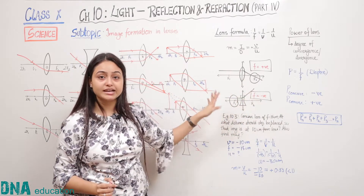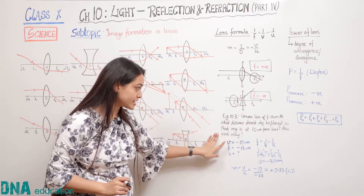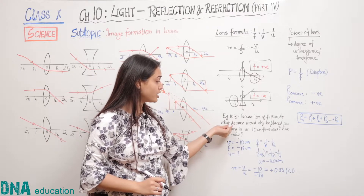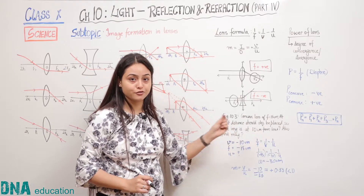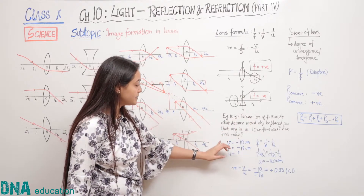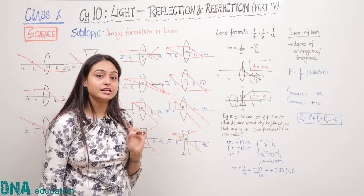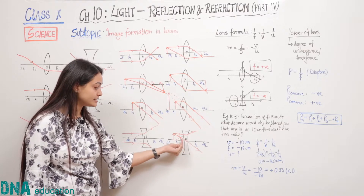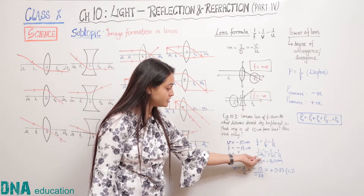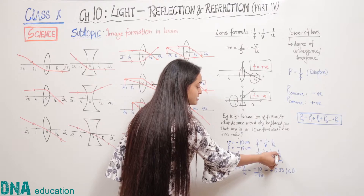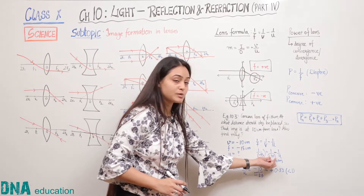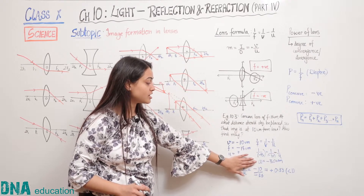Let us consider NCERT example 10.3. A concave lens has a focal length of 15 cm and we have to find the object distance so that the image is formed at 10 cm from the lens. So f = −15 cm (negative because it is a concave lens) and the image distance v = −10 cm (negative because in a concave lens the image is always on the negative x-axis). Putting these values into the lens formula 1/f = 1/v − 1/u, the object distance u comes out to be −30 cm.